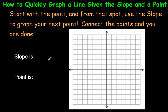This video is going to quickly show you how to graph a straight line if you are given the slope and a point on that line. What we're going to be doing is starting with the point that you are given, and from that exact spot, we will use the slope to graph the next point. When you connect the points, you're done. That's all it is.